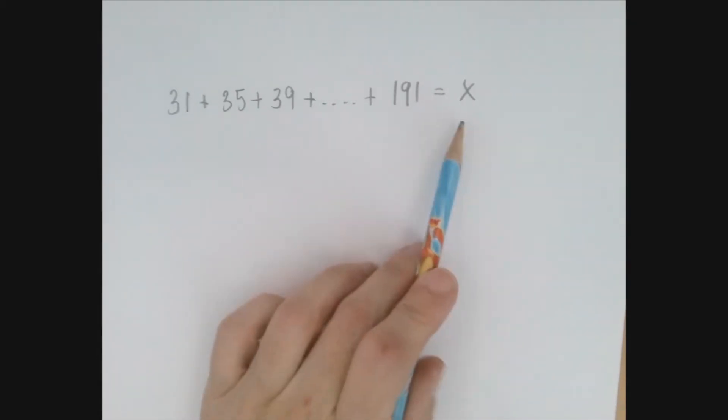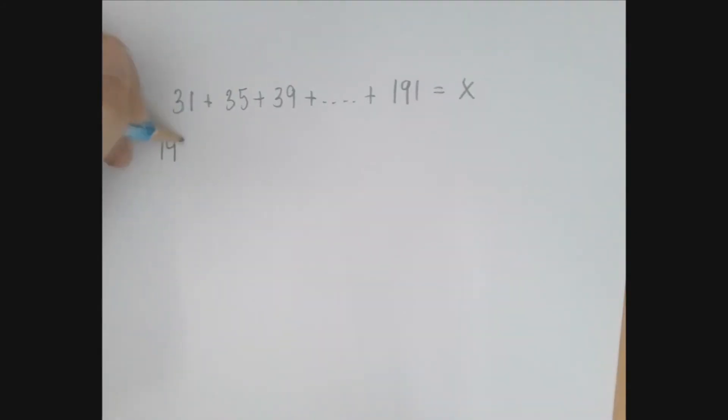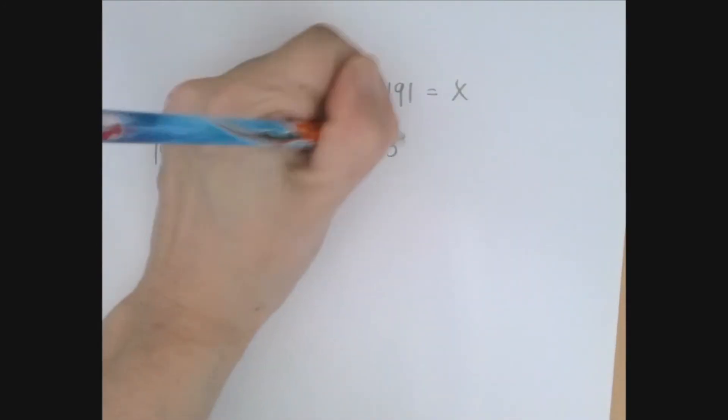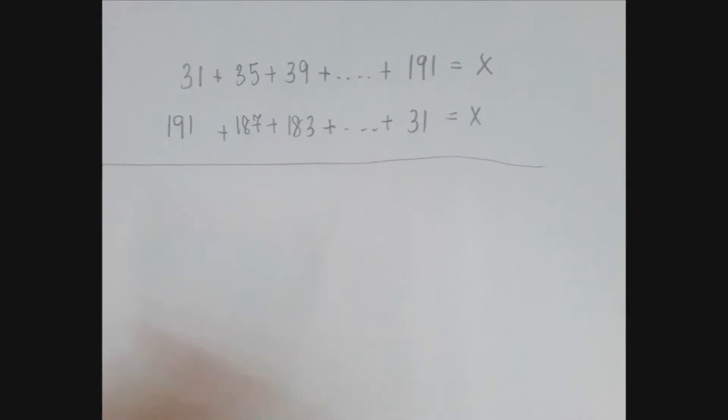So this X here will be our answer. We perform the usual trick. First, we're going to repeat the first line, but we line them up backwards. So the second number should be four less than the previous, the third number should be four less again, and the last number in the second row should be what the first number in the first row was. That's 31. We're going to add all these numbers together, and then at the end divide by two.